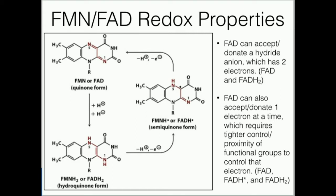FAD and FMN can accept or donate a hydride anion, which carries two electrons. That would be going from the top to the bottom of the diagram — directly transferring two electrons at a time, if that's what the mechanism of the enzyme dictates. It all depends on the enzyme's mechanism.